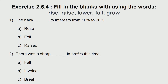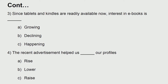Next exercise: fill in the blanks using the words rise, raise, lower, fall, grow. When the bank dash its interest from 10 percent to 20 percent, there was a sharp dash in profits this time — fall, invoice, or break. Next: since tablets and Kindles are readily available now, interest in e-books is growing, declining, or happening. The recent advertisement helped us dash our profiles — rise, lower, or raise.